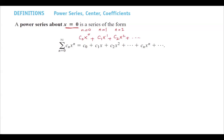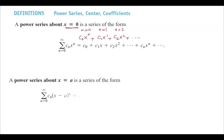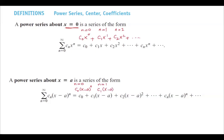Now, what if we change the center? If the center is not 0, like a number a, the series can be defined as the form of c_n times (x minus a) to power n. With the same argument, we plug in different values for n. So when n equals 0, you get c_0 (x minus a) to power 0; when n equals 1, you get c_1 (x minus a) to power 1; when n equals 2, you get c_2 (x minus a) squared. Then you add all these terms together and get your power series centered at a.